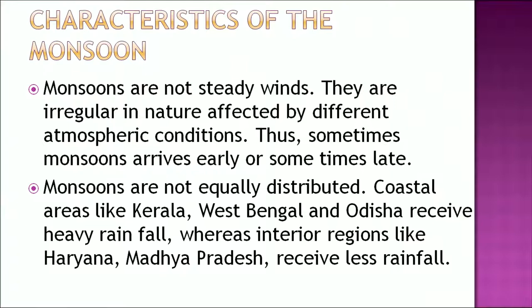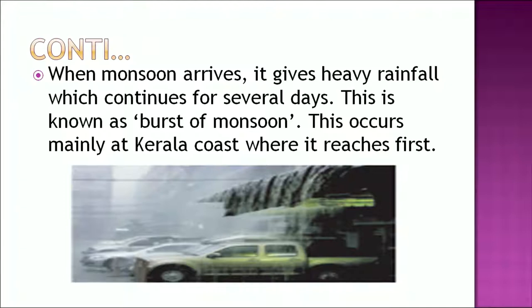What are the characteristics of monsoon? Monsoons are not steady winds — they are irregular in nature, affected by different atmospheric conditions, so sometimes they arrive early and sometimes late. Monsoons are not equally distributed: coastal areas like Kerala, West Bengal, and Odisha receive heavy rainfall, whereas interior regions like Haryana and Madhya Pradesh receive less rainfall. When monsoon arrives, it gives heavy rainfall which continues for several days — this is known as the 'burst of monsoon,' which occurs mainly at the Kerala coast where it reaches first.